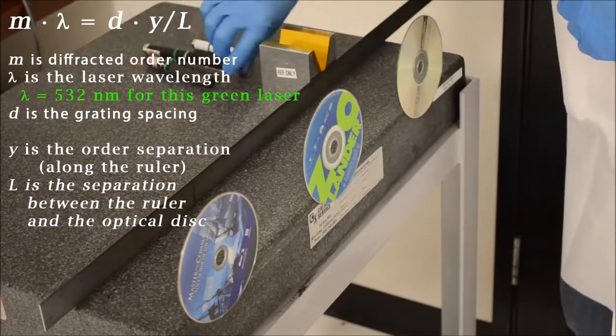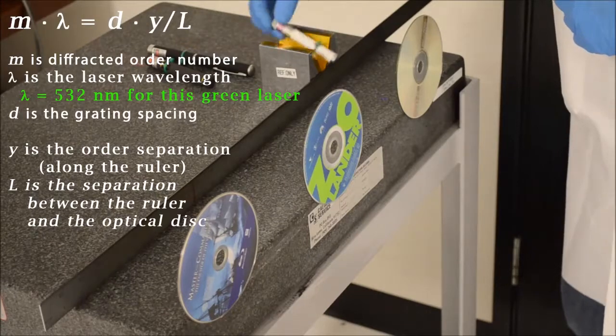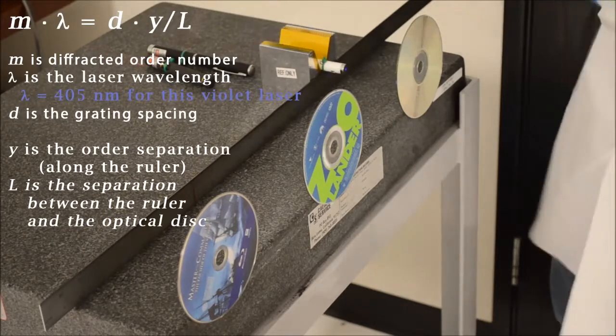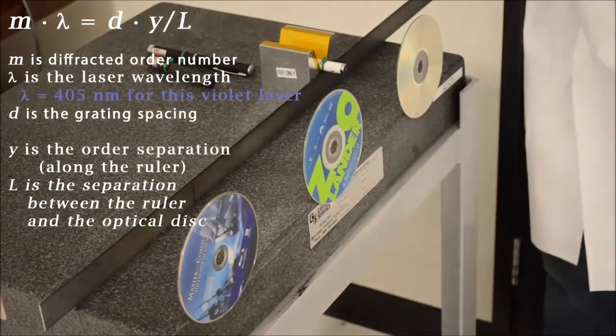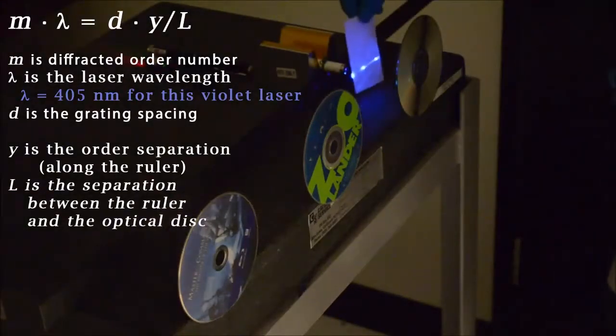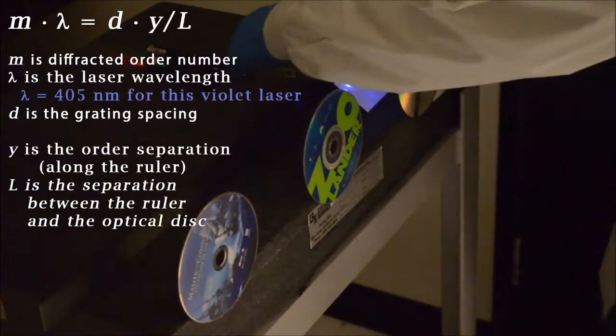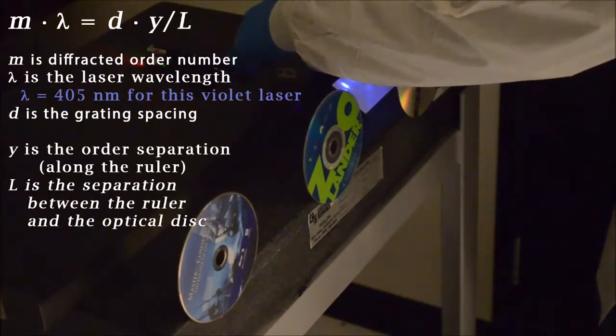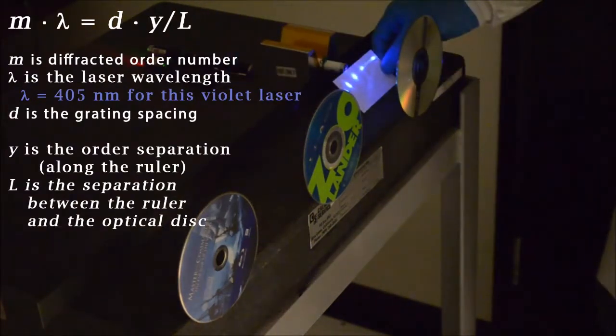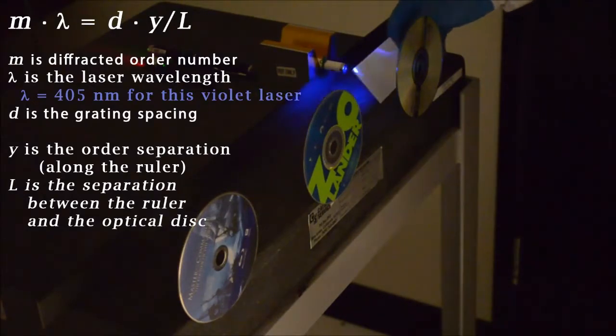And here's an even different color, shorter wavelength. This is a violet laser. The violet is a little more difficult to see with the lights on, so we'll turn the lights off. You can actually see the violet fluorescing this business card blue here. I'll align my zeroth order so it goes right back onto the laser itself so that the diffracted orders are equally spaced.